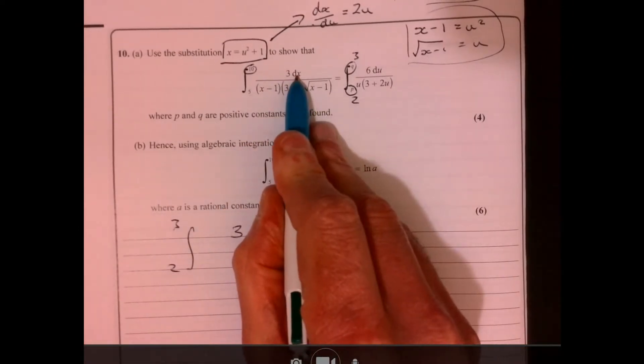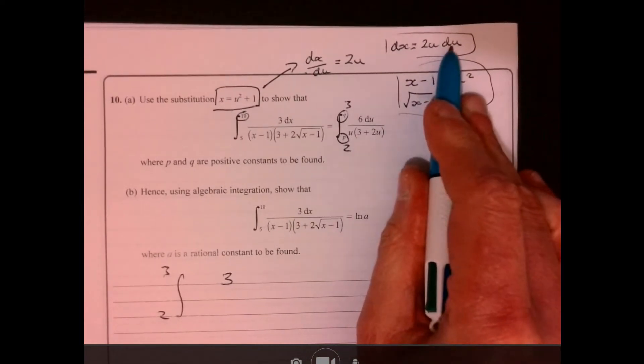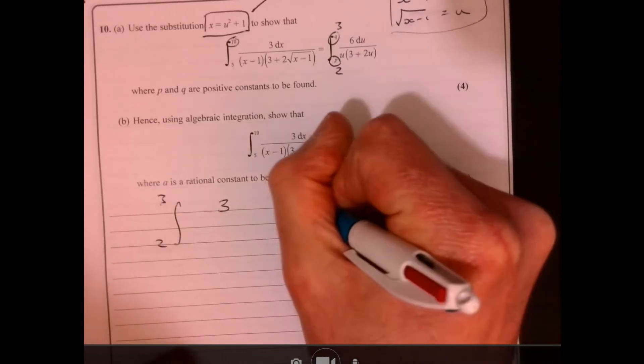Now, instead of writing dx, remember, we're going to write 2u du. Du. There we are.